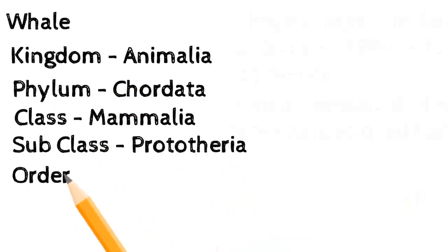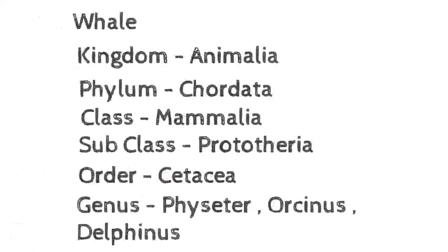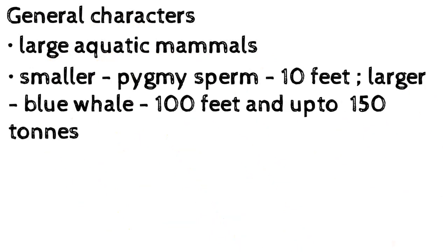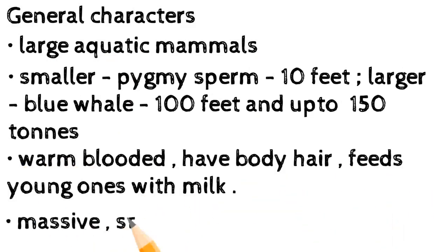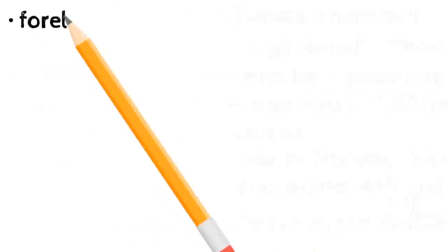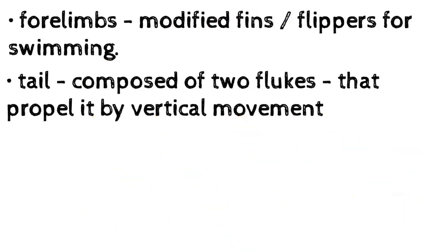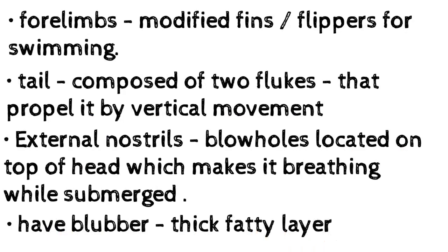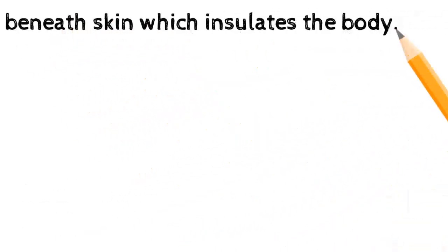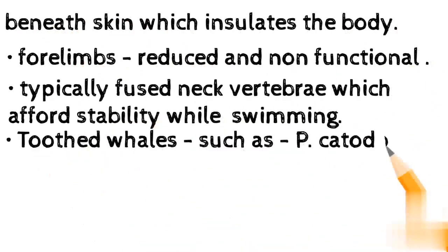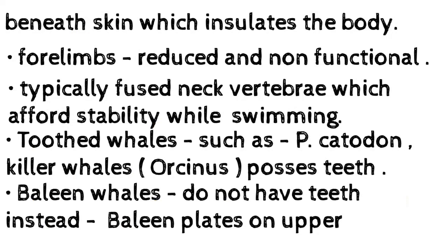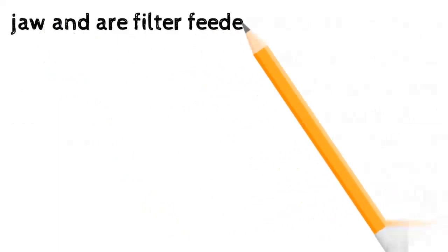Whale — Kingdom: Animalia; Phylum: Chordata; Class: Mammalia; Sub-class: Theria; Order: Cetacea; Genera: Physeter, Orcinus, Delphinus. Large aquatic mammals — smaller pygmy sperm whale at 10 feet; larger blue whale at 100 feet and up to 150 tons. Warm-blooded; have body hair; feed young ones with milk. Massive streamlined body; four limbs modified into fins/flippers for swimming. Tail composed of two flukes propelled by vertical movement. External nostrils — blowholes — on top of head, enabling breathing while submerged. Blubber: thick fatty layer beneath skin for insulation. Fused neck vertebrae afford stability while swimming. Toothed whales such as Physeter catodon and killer whales (Orcinus) possess teeth; baleen whales lack teeth and instead have baleen plates on the upper jaw — filter feeders.